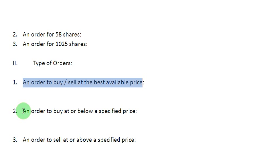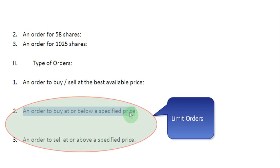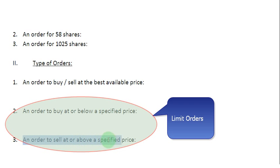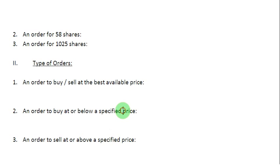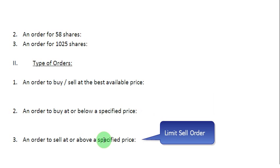The second type of order is an order to buy at or below a specified price. If you are telling your broker to buy at or below a specified price, you are basically placing a limit order, and this specified price is known as the limit price. Similarly, if you are on the selling side and you place an order to sell a share of stock at or above a specified price, then you have also placed a limit order. The first case is called a limit buy order and the second is called a limit sell order.